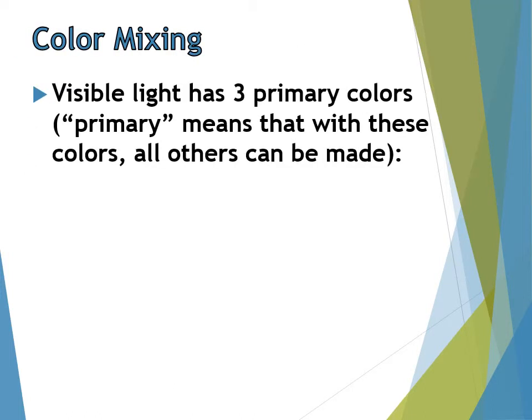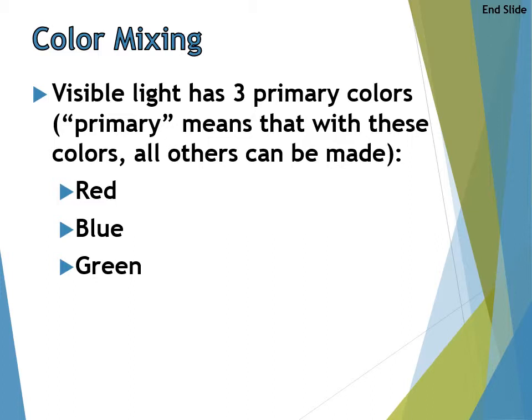The three primary colors that our eyes can see are red, blue, and green, because we have three chemicals — three types of cones — that chemically react to those colors. But you may have been told in art class that red, blue, and yellow are the three primary colors. The reason for this difference is that visible light and pigments work slightly differently. For visible light, the three primary colors are red, blue, and green.